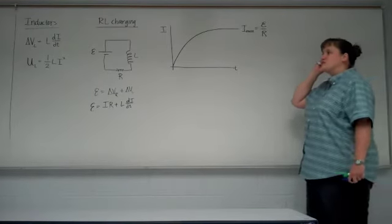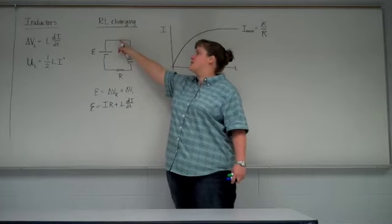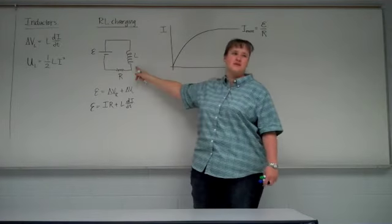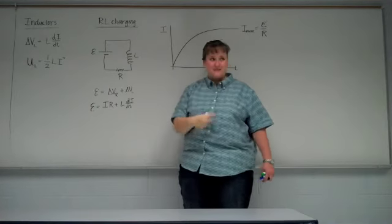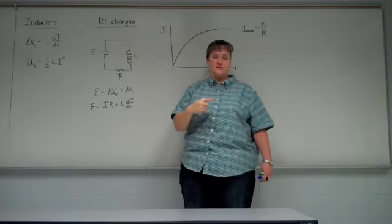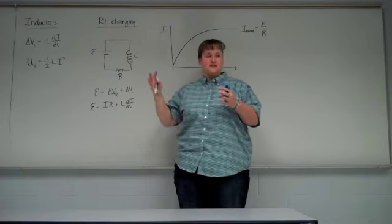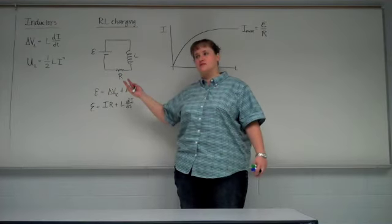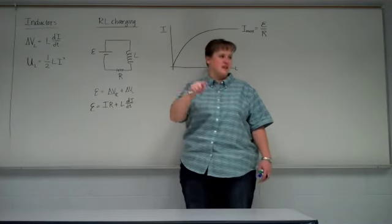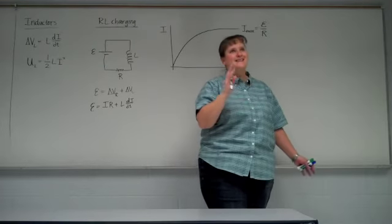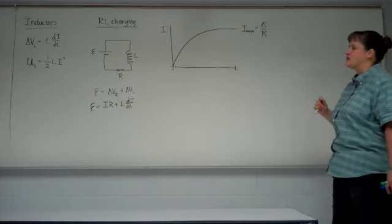That energy can be used if we disconnect this circuit from the battery and connect it across some other resistor. That inductor will try to keep the current flowing — you can think of the inductor as being happy with what it just had. If it had current, it wants to keep current flowing. So the inductor could actually discharge and make current flow, not indefinitely, but for a little bit of time you can make current continue to flow through the circuit.